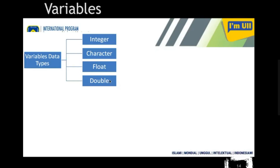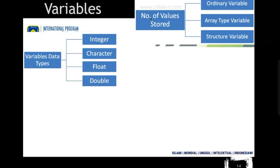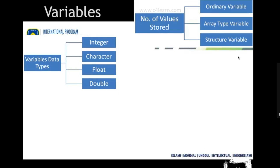In general, data types can be classified into integer, floating, character, double, string, and similar types. Now, based on the number of values stored, a variable can also be classified. An ordinary variable stores a single value — for example, 'my number = 2' is an ordinary variable storing only one value. If 'my number' stores 2, 3, 5, 6, 8 — a list of values — that is called an array type variable.